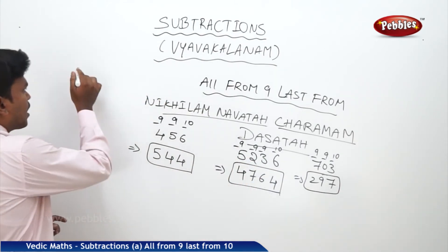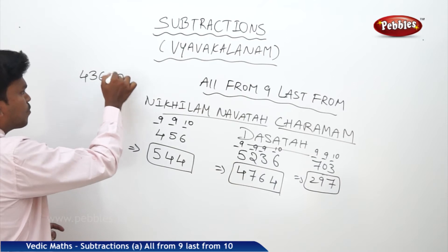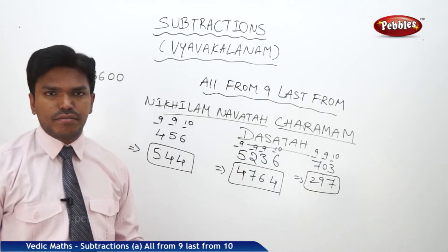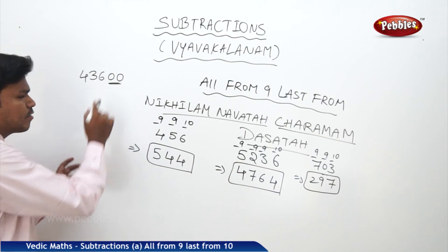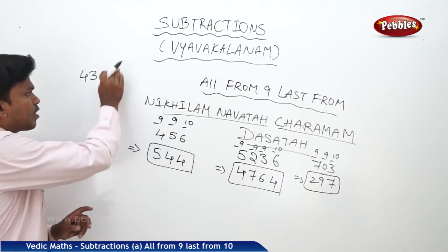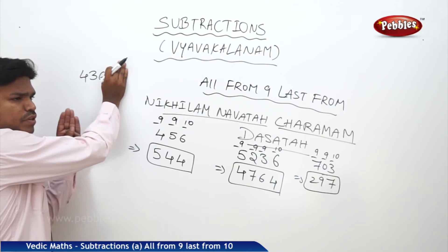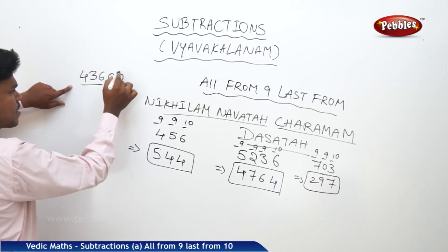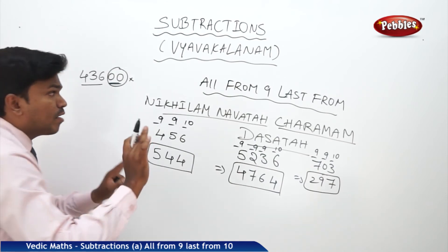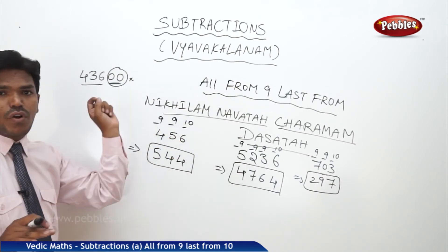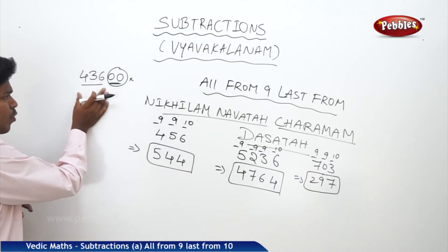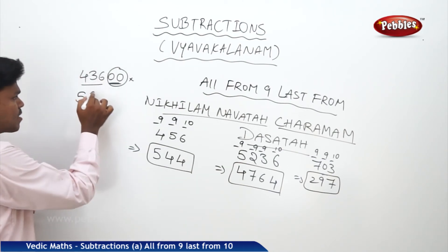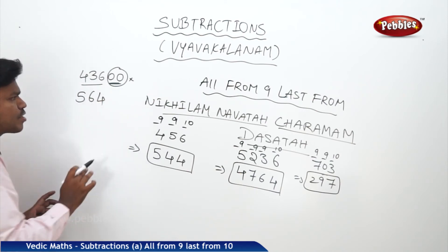One more example — a number like 43600. Whenever you are getting zeros at the end, ignore those zeros for some time. Write 'All from Nine, Last from Ten' for the remaining number only, which is 436. So: nine minus four is five, nine minus three is six, ten minus six is four — giving 564. Then drop the zeros back down: the answer is 56400.